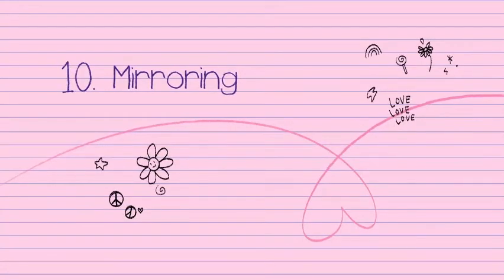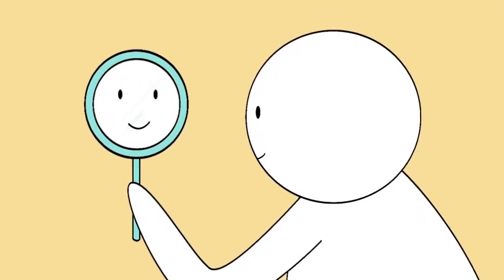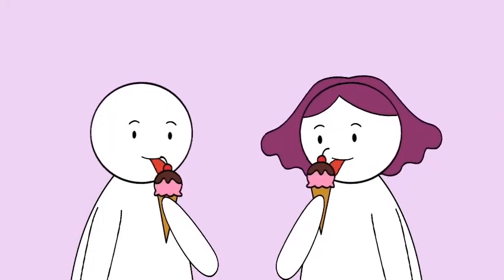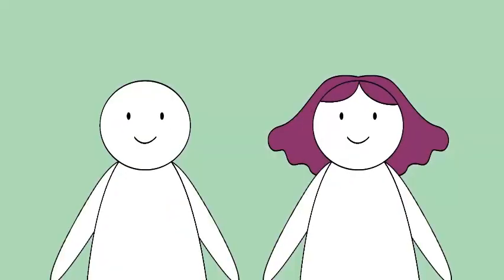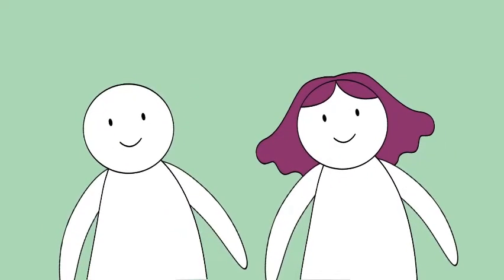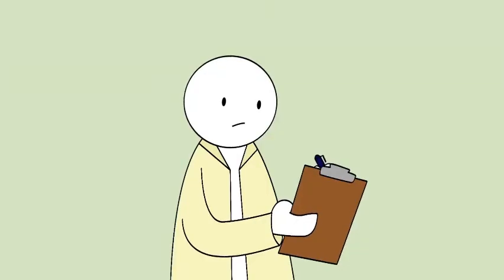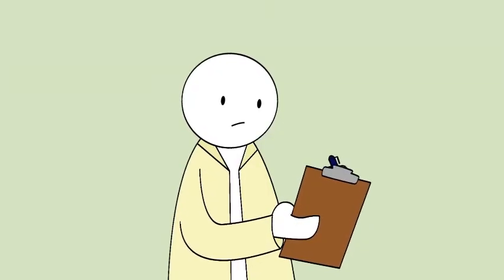10. Mirroring. Another big sign of attraction is mirroring. If you look closely, you might find that your crush seems to be copying your movements and behaviors in a subtle way. It might be tilting their head to the side in the same way as you, or adopting a similar posture. Mirroring has been studied quite intensively in psychological research.